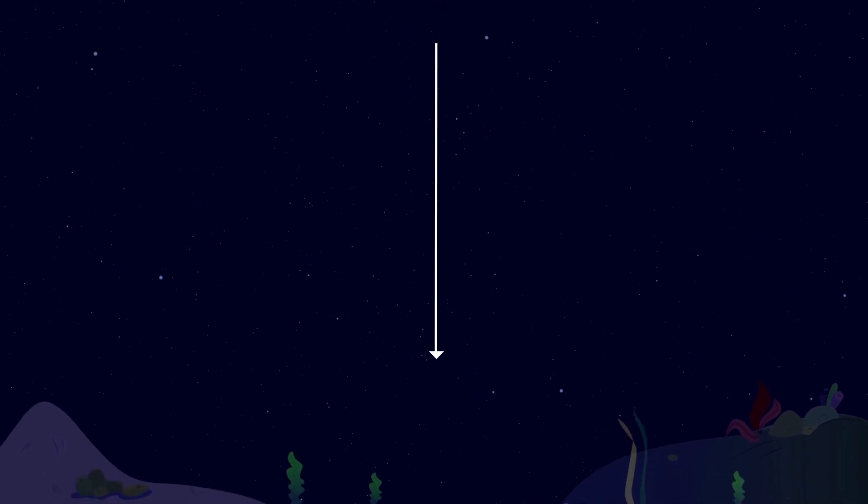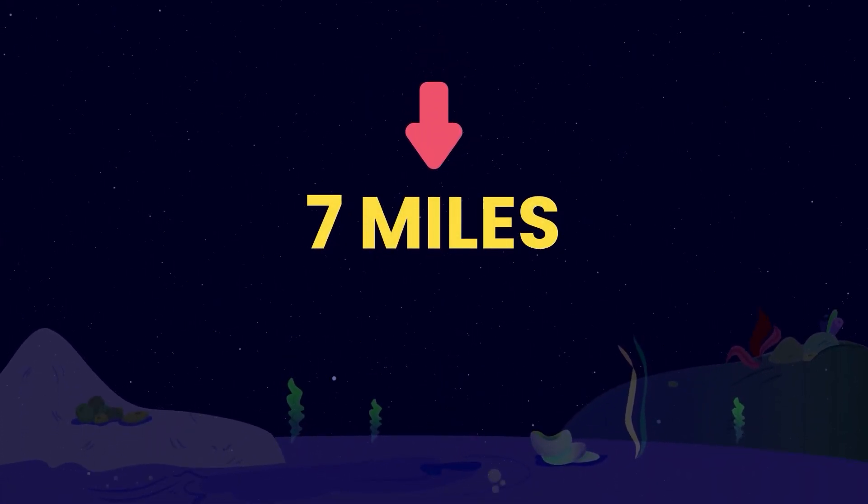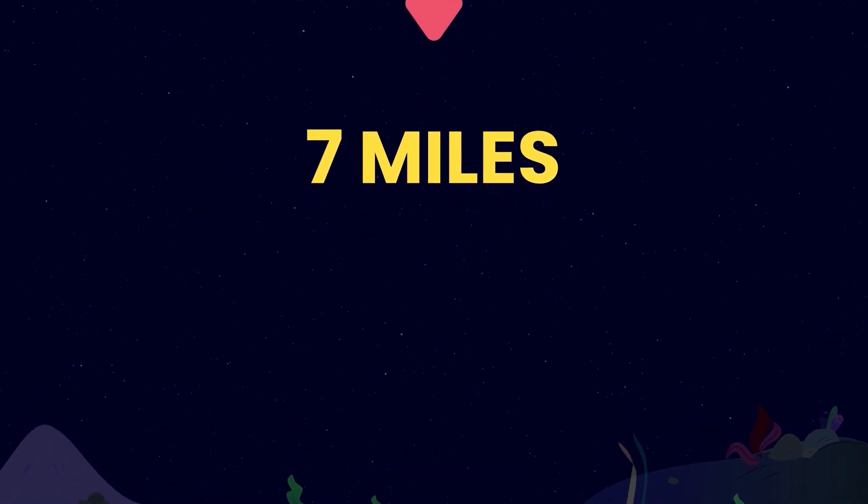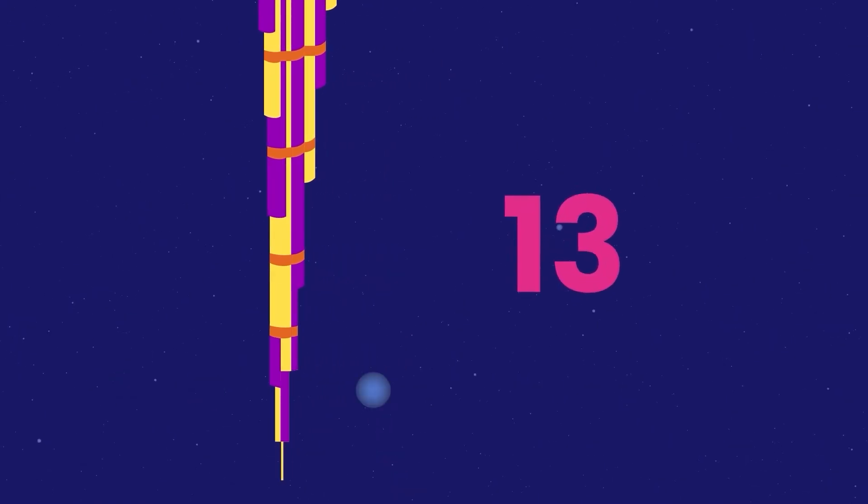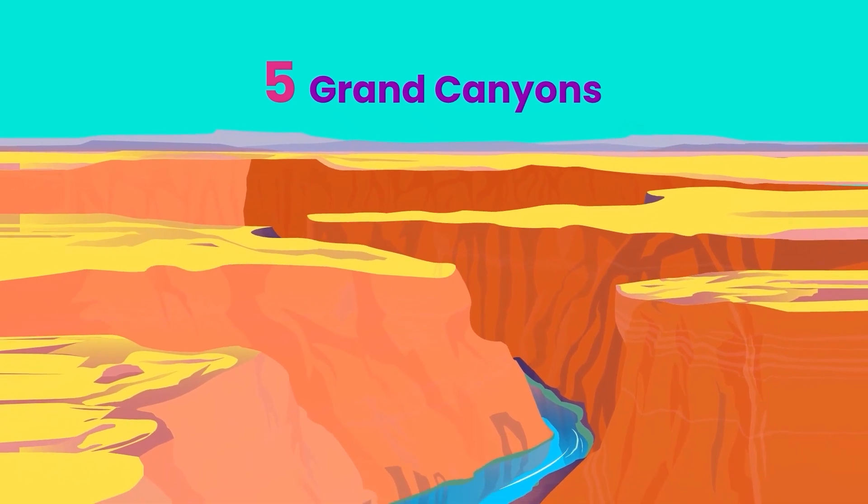If we want to make the descent down to the very bottom, we need to go almost seven miles down below the surface. This is Challenger Deep. If you were to stack the Burj Khalifa, the world's tallest building upside down, you would need 13 of them to reach this depth. You could even fit five grand canyons between this point and the water's surface.